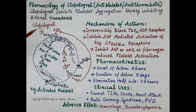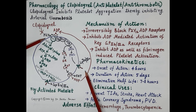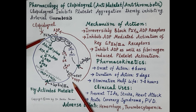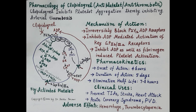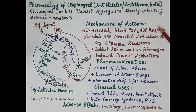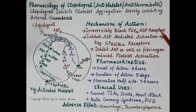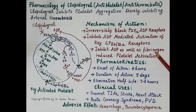Clopidogrel blocks P2Y12 receptors and thereby prevents stimulation of GP2b3a receptors. It also inhibits the release of pro-aggregatory ADP. The mechanism of action of clopidogrel: it blocks P2Y12 ADP receptors, inhibits ADP-mediated activation of the final GP2b3a receptor, and thus inhibits both ADP- and fibrinogen-induced platelet aggregation.